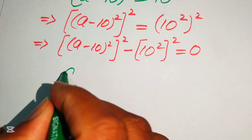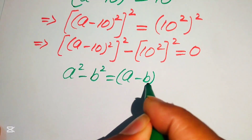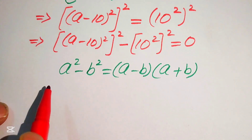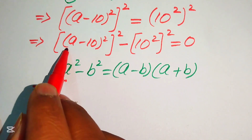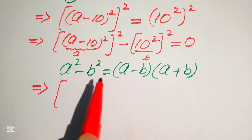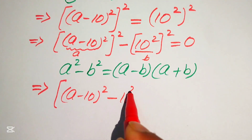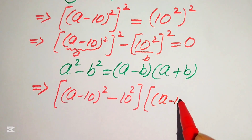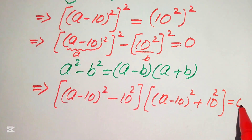The formula is: if we have a squared minus b squared, it equals (a minus b) times (a plus b). According to this formula we write our equation as: our a is (a minus 10) squared and b is 10 squared, so it becomes [(a minus 10) squared minus 10 squared] times [(a minus 10) squared plus 10 squared] equals 0.